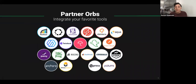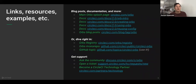Here are some examples of partner orbs that are out there today — folks in the DevOps space, monitoring space, code coverage. If you're interested in becoming a technology partner with CircleCI, please contact us after the webinar. I've also included links and resources to help you get started, including documentation on creating your first orb and the orb registry where you can see what orbs are already available.